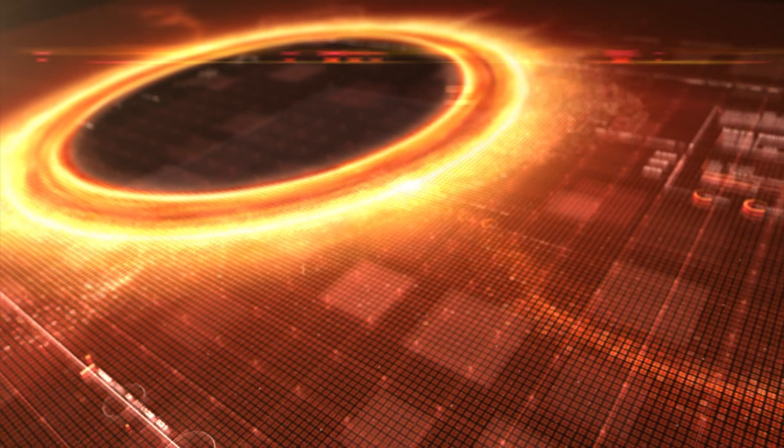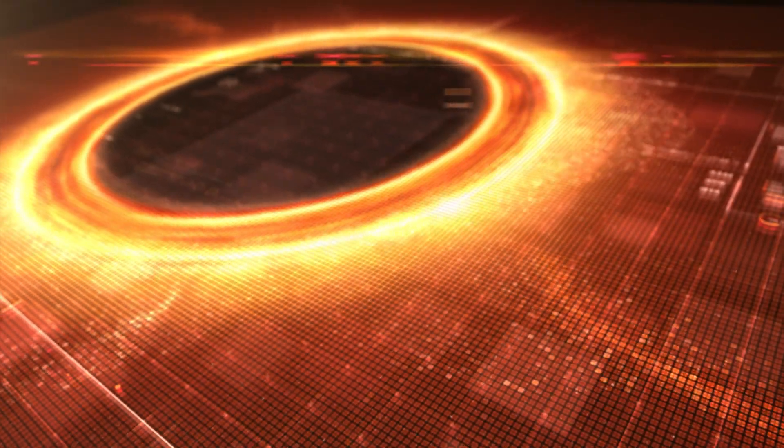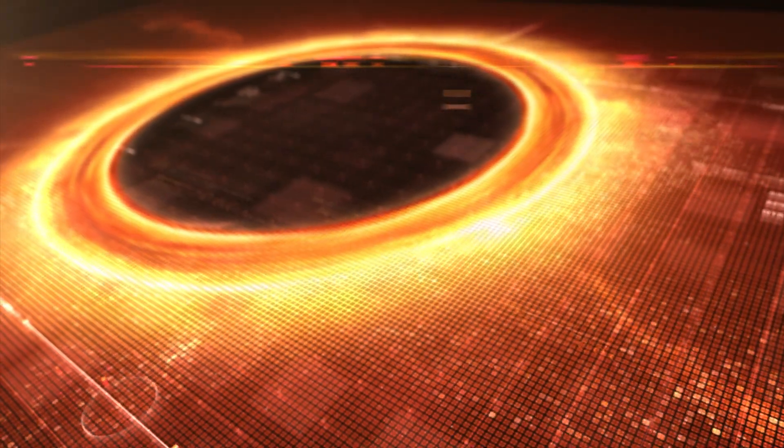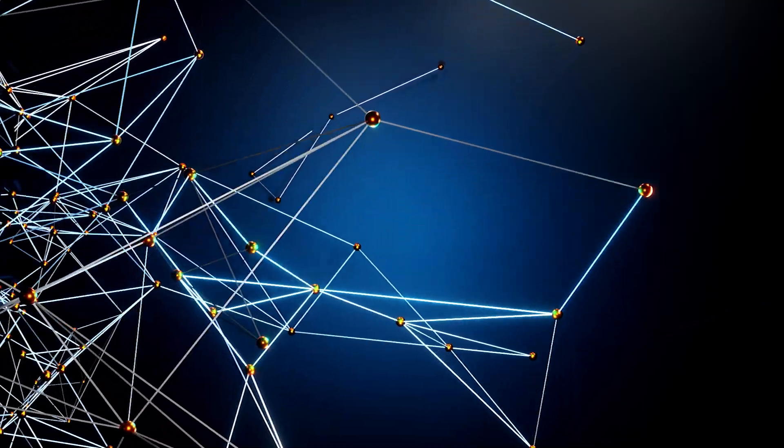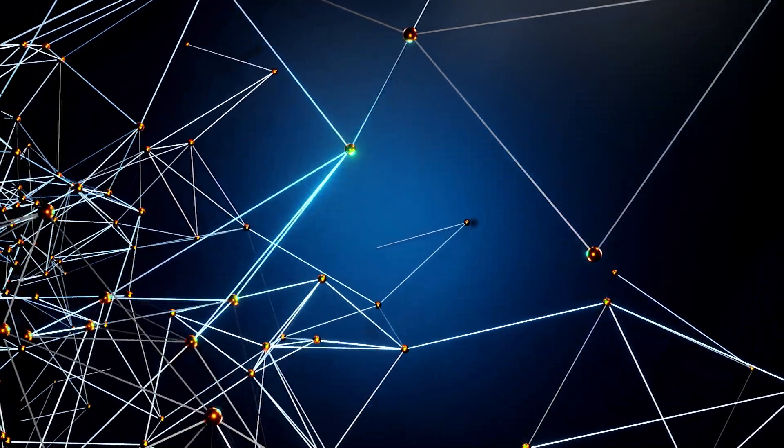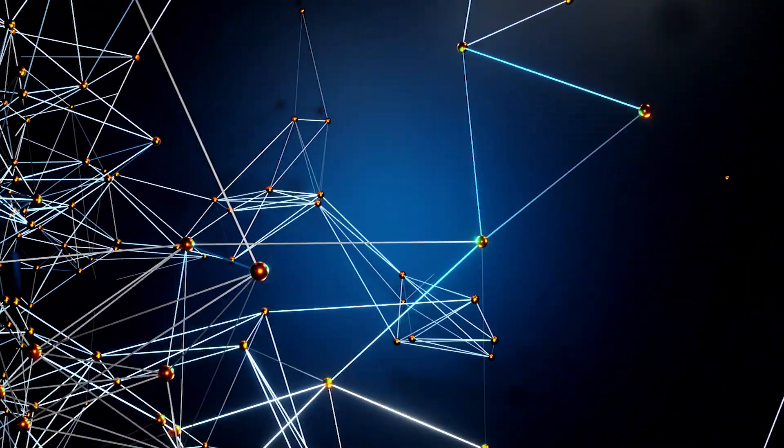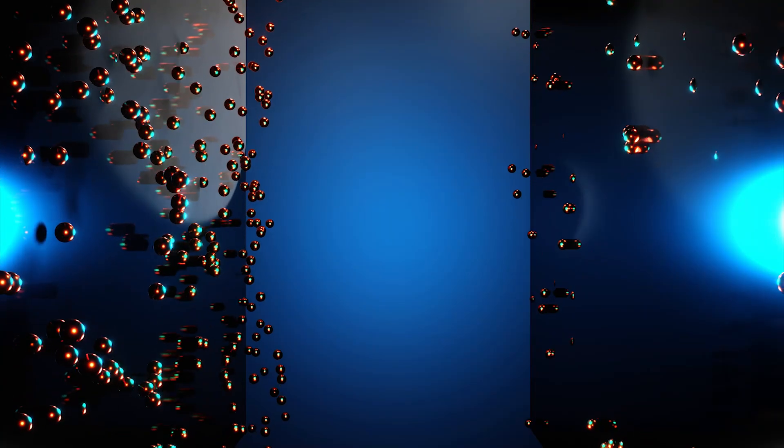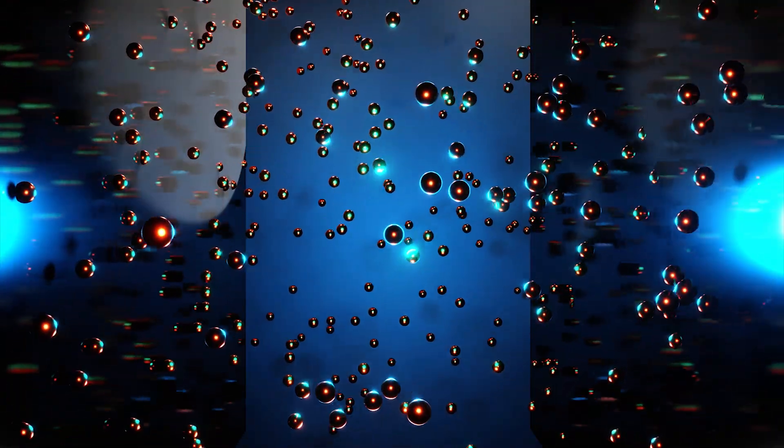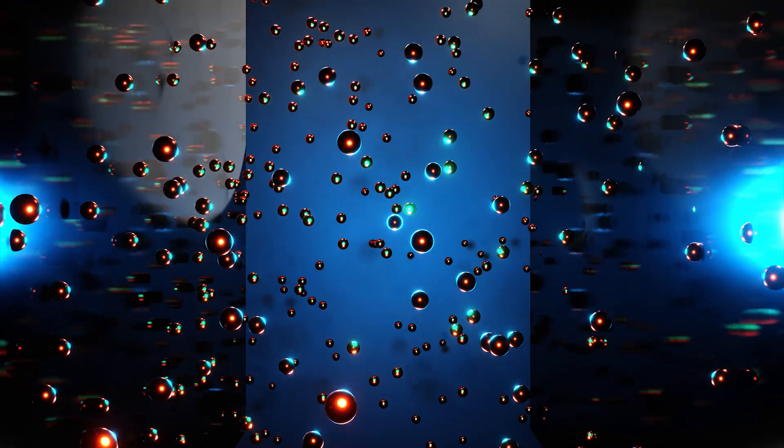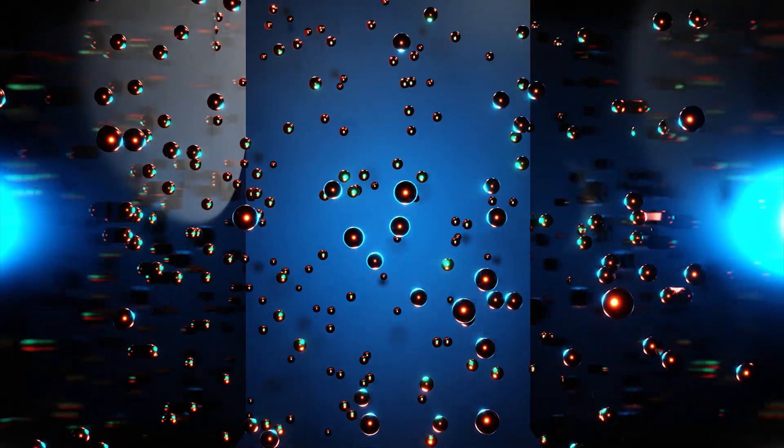Thanks to general relativity, we think we understand what happens in this extreme gravity. With the help of quantum mechanics, we can make an intelligent estimate as to what happens at smaller microscopic scales. However, when the two theories are merged, as they would be at the center of a black hole, they collapse, leaving us with no understanding of what's going on.